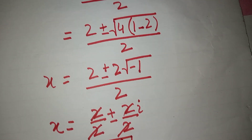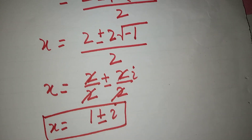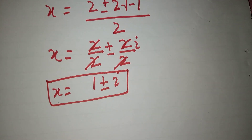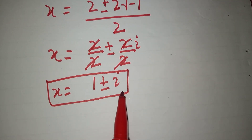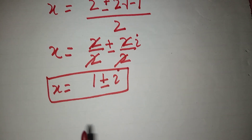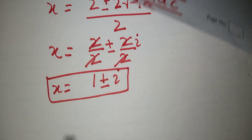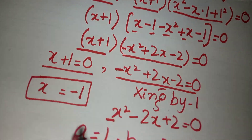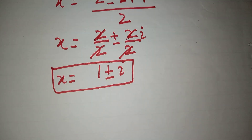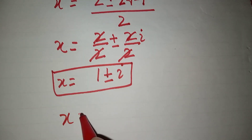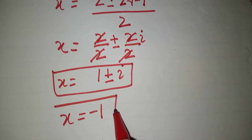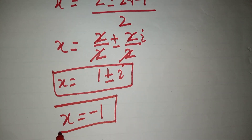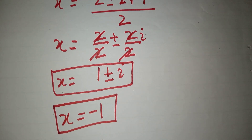We have found two values of x: x equals 1 plus or minus iota, and x equals minus 1. These are both values of x. Thanks for watching my video. Please subscribe to my channel for more exciting videos.